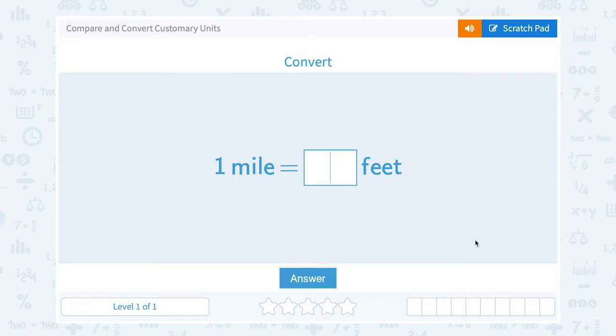Let's take a look at how to compare and convert customary units. They ask us to convert one mile is equal to how many feet? Since they're asking for just one mile, we need to know our rule here that one mile is equal to 5,280 feet.